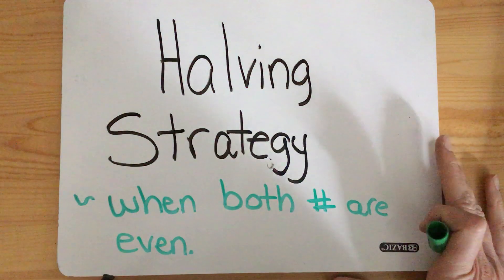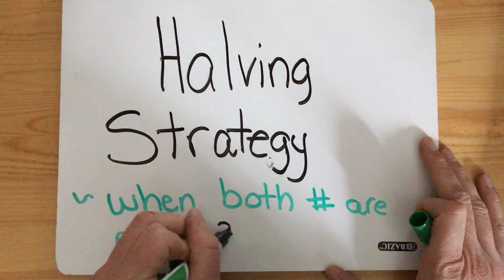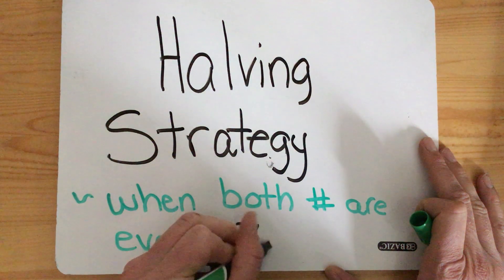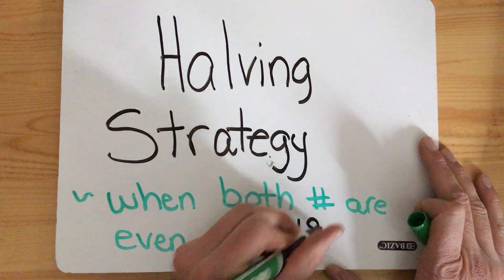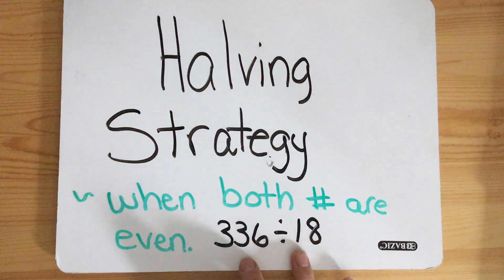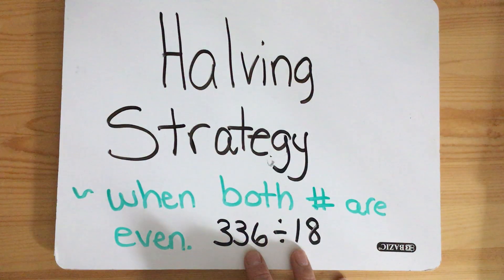So what I mean by that is if you have an even number like 336 and we divide it by another even number, say pretend by 18, this would work only when both of these numbers are even.